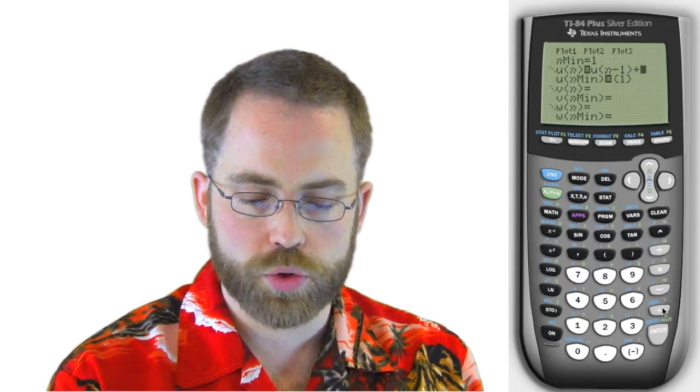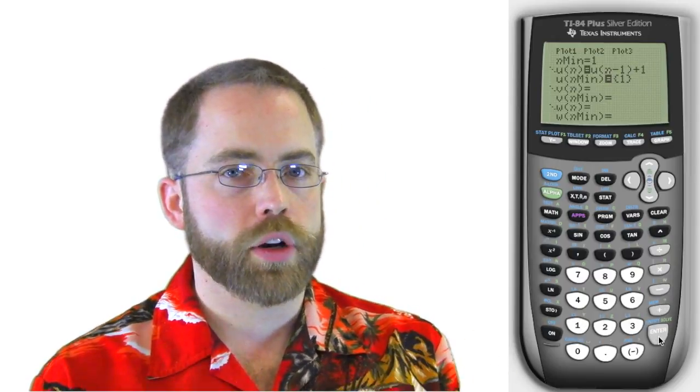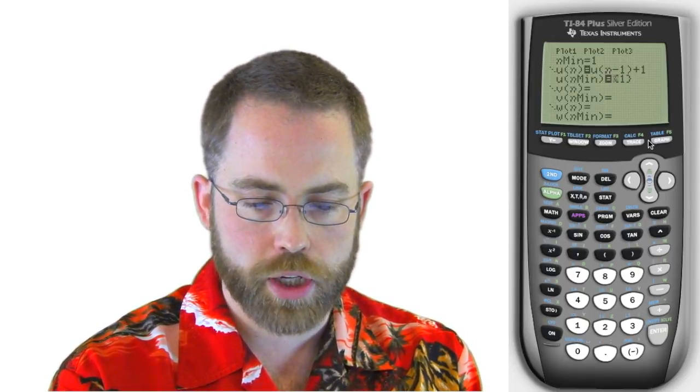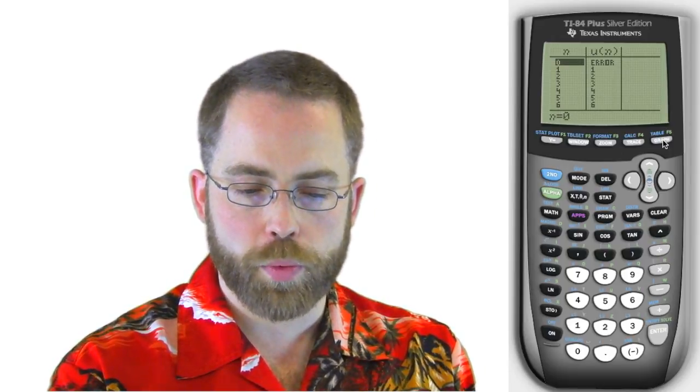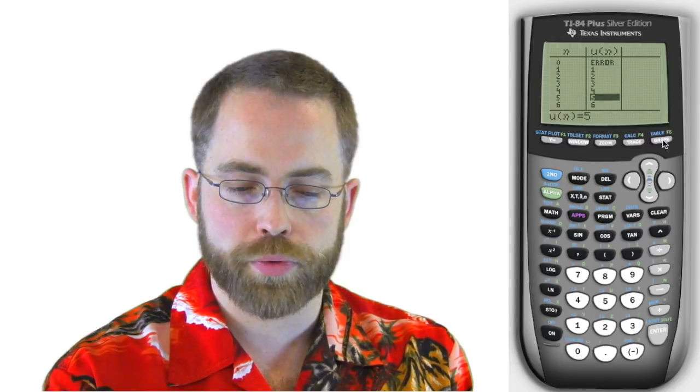Every single term right now, the way I have it set up, is equal to the term before it. Well, this isn't going to go anywhere. If I want to say that each term is equal to the term before it plus 1, then now I'm going to start having an interesting recursive formula. I'm going to say that this particular term is equal to the term before it plus 1. Well, what's that going to do? Let's go to our table, and let's check it out and see what that does. So you can see where we started. We said that the n min is 1, and u of n min was equal to 1 as well. And then each term is equal to the term before it plus 1.